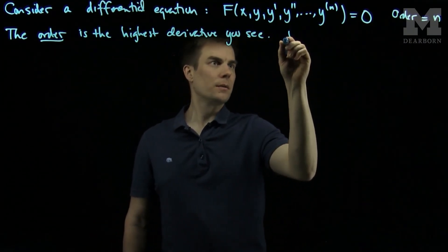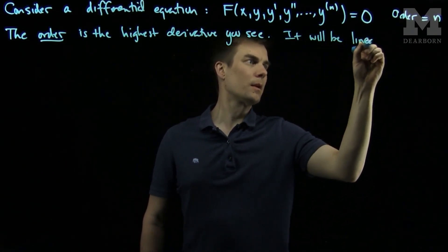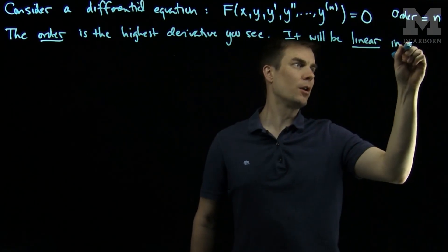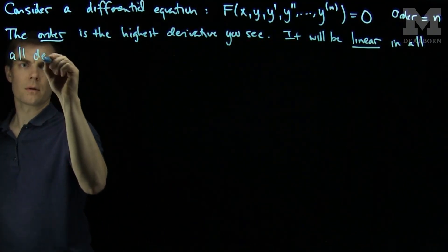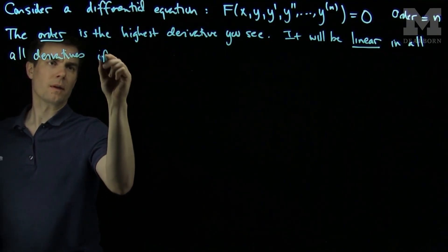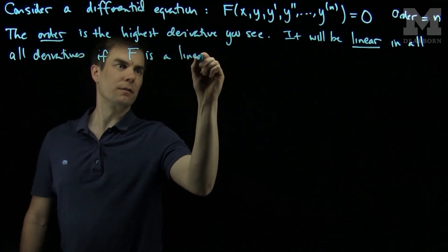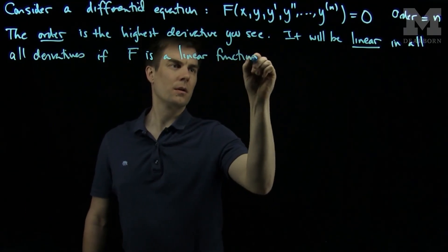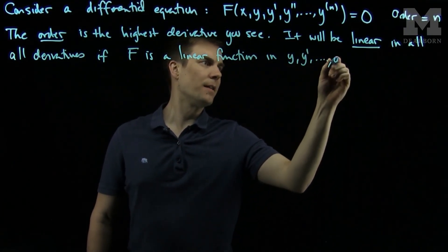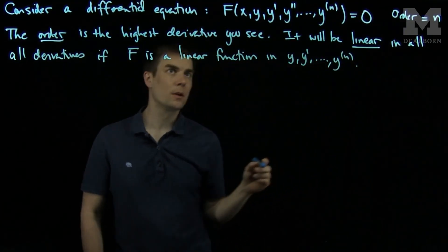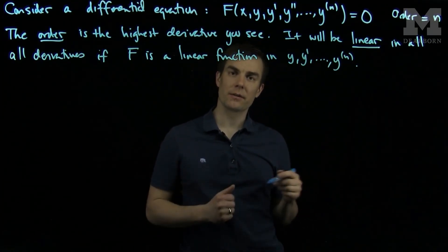It will be linear in all derivatives if f is a linear function in y, y prime, and the nth derivative of y. So if this function f is linear in any of the variables, we say the expression is a linear differential equation.